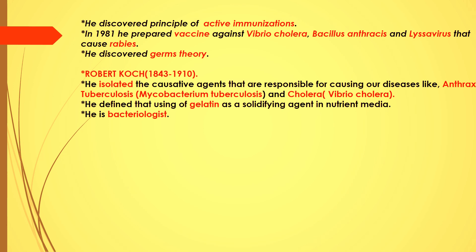Robert Koch: the two most important points are, first, he was a German bacteriologist, and second, he determined pathogens to combat the transmission of infection between people, which at that time were considered fatal. These include Mycobacterium tuberculosis which causes tuberculosis, Vibrio cholerae which causes cholera, and Bacillus anthracis which causes anthrax.